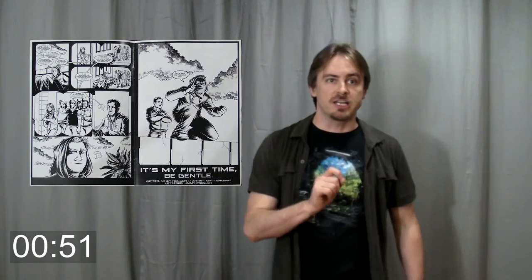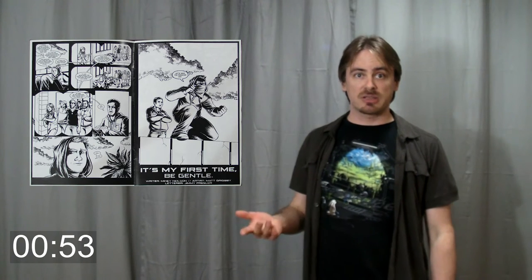Extraordinary by Nielsen and Grigsby is about the difference between having superpowers and being a superhero. We're introduced to Freddy, a kid with genuine superpowers, discovering that fighting crime isn't exactly a realistic pursuit.